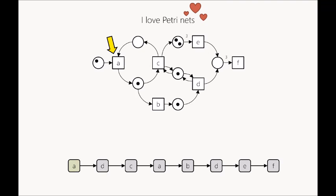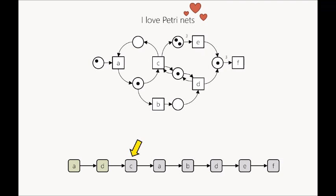If a transition is enabled, it can fire, meaning removing the tokens from the preset and producing tokens in the places of the post set — consuming two tokens for the ingoing arcs and producing a token for the one outgoing arc. Now a has fired, changing the marking of our Petri net. We can check the next event labeled d, which is enabled. If d fires, the Petri net reaches a new marking that enables the next event, c. We fire c to reach the next marking.